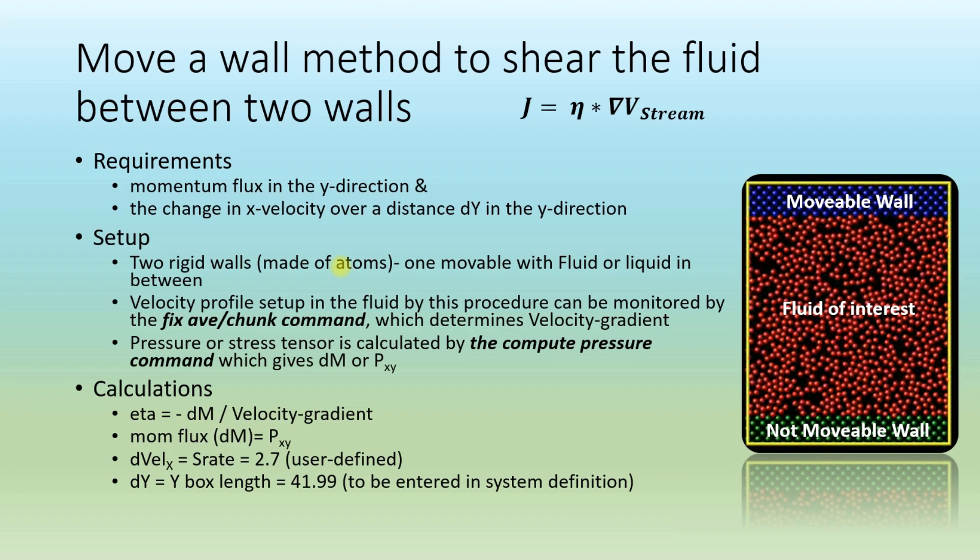Our simple setup will look like a box with two walls: one movable wall in blue and the immovable wall in green, with the fluid (whose viscosity is needed) in red color in between the walls.